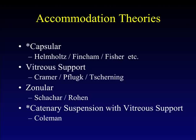Von Helmholtz, in 1865, proposed what is still the most widely held theory, which relates lens change in shape to a capsular constriction or molding of the lens. He did have others who felt that there were other causes of the lens change in shape that related to vitreous support.